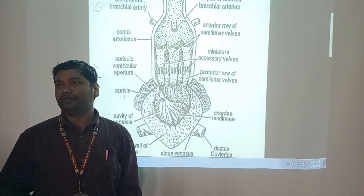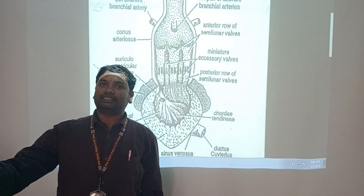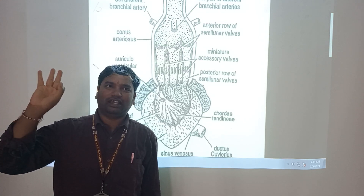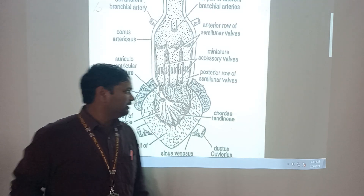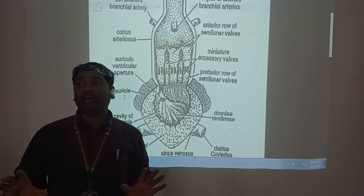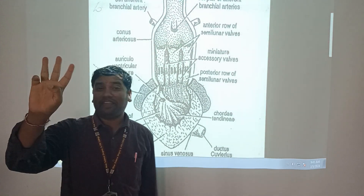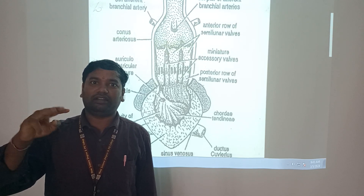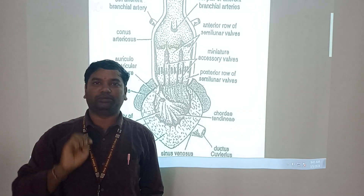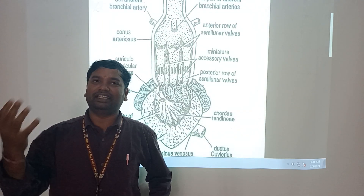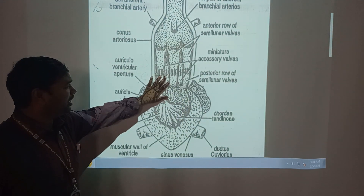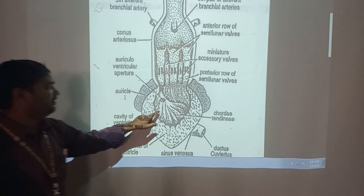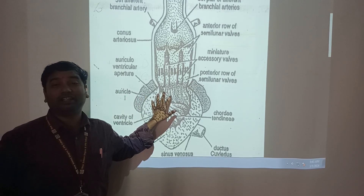The main important parts of the Scoliodon circulatory system are: blood, heart, arterial system, and venous system. The Scoliodon heart has only two chambers. Amphibians have three chambers, snakes have two chambers - divided into indivisible and non-indivisible ventricles - but crocodiles have four chambers, birds have four chambers, and mammals also have four chambers. Scoliodon heart has only two chambers: one auricle and one ventricle.